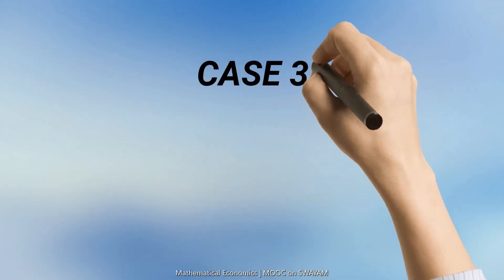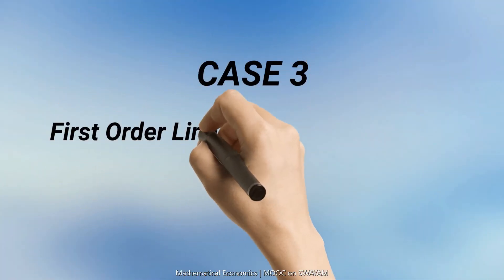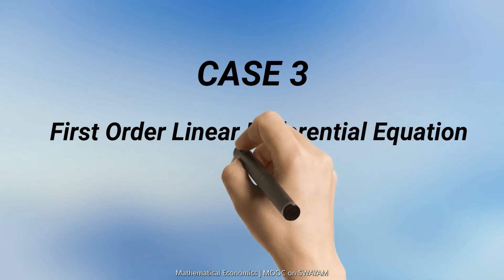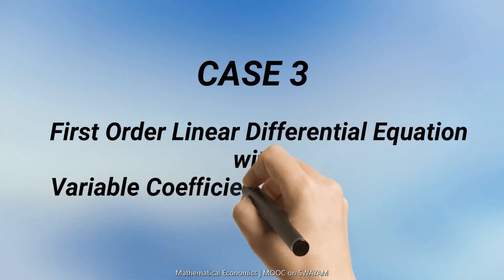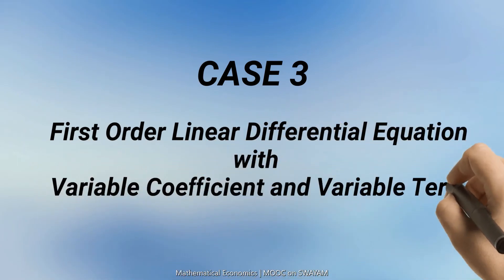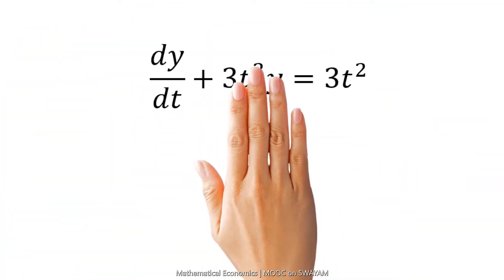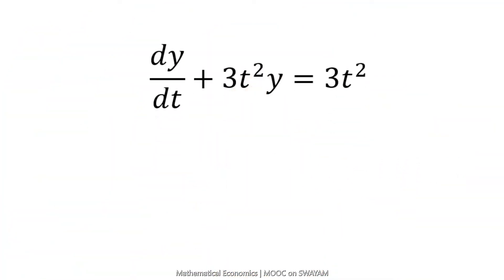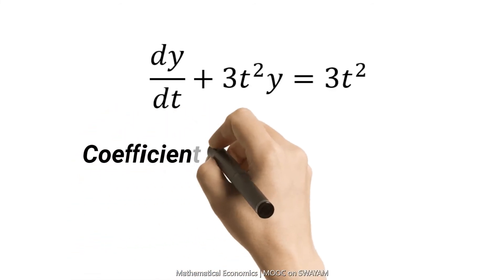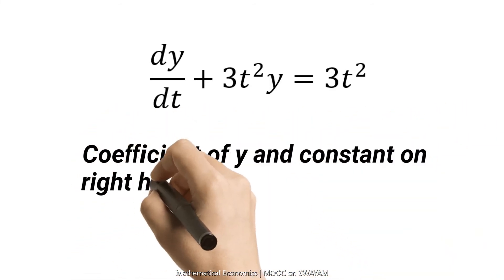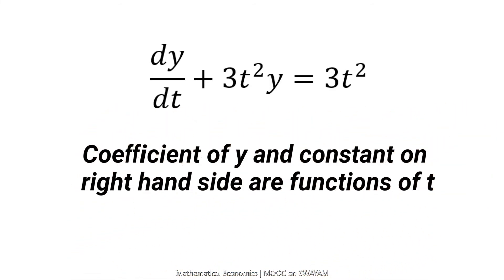The third case may be a first-order linear differential equation with variable coefficient and variable term. In this differential equation, both the coefficient of y and the term on the right-hand side are functions of t. This is a first-order linear differential equation with variable coefficient and variable term.